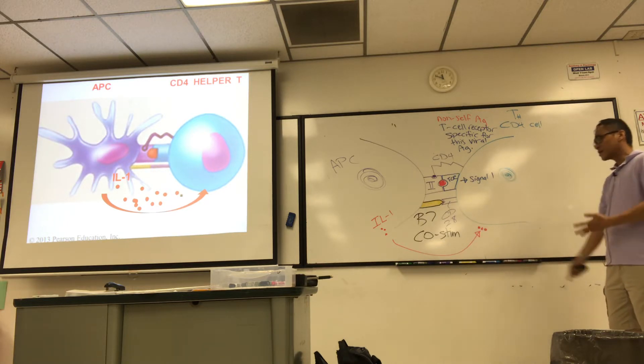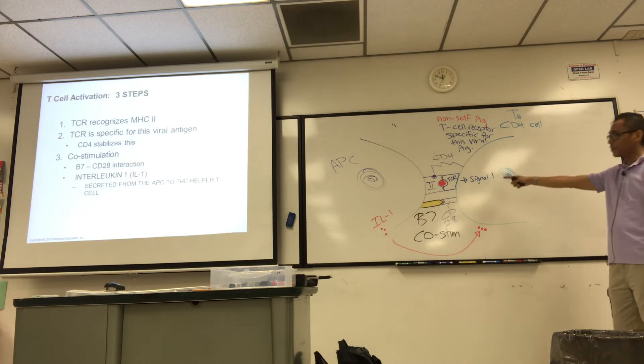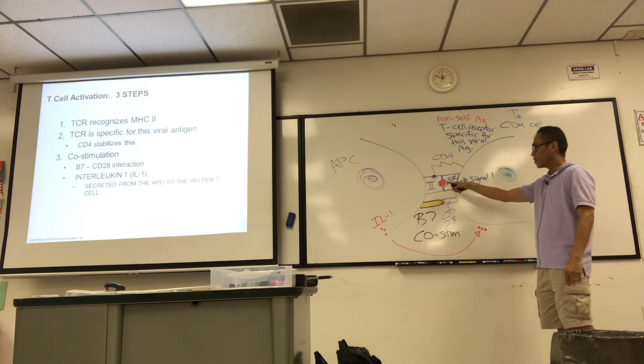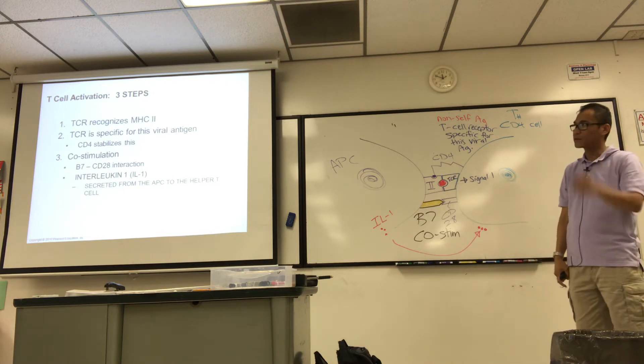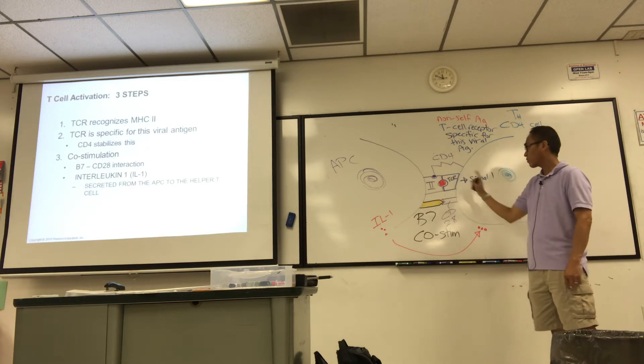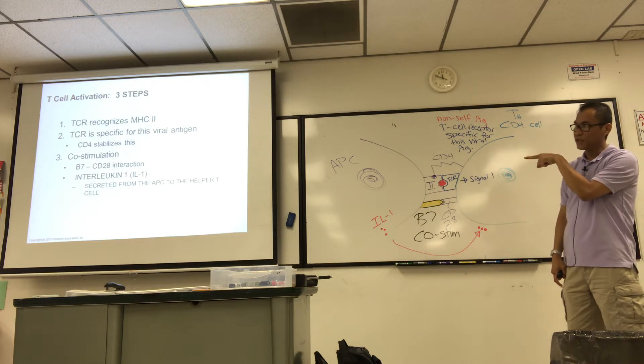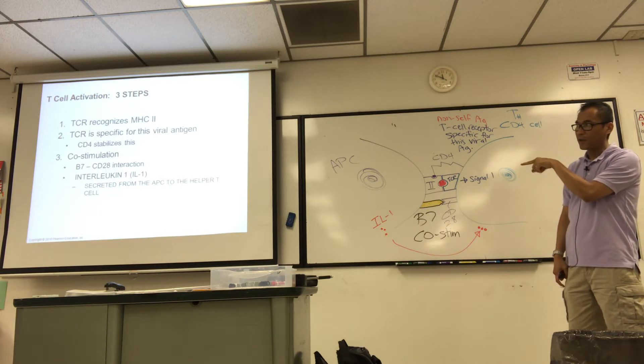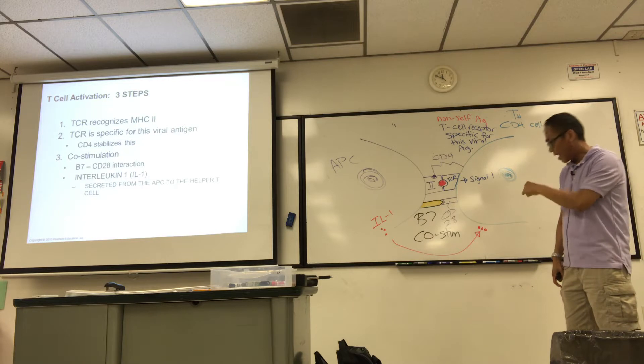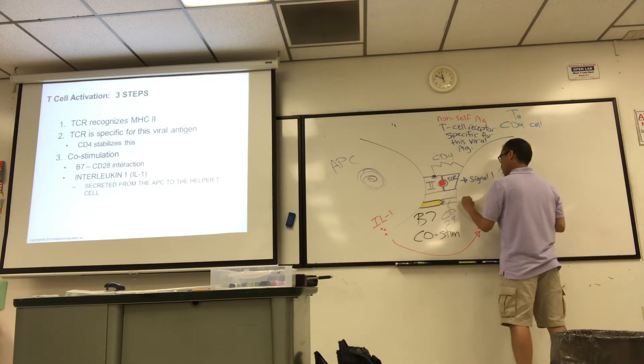So I'm going to go back to the slide and make sure we outlined everything. Number one, TCR recognizes MHC II. Got it, check. Also, it's specific for this viral AG. Check that box. CD4 stabilizes this for signal 1. Check that box. Now the co-stimulation is the B7 and CD28 along with IL-1. Check that box. That sets forth a signal 2 to complete activation.